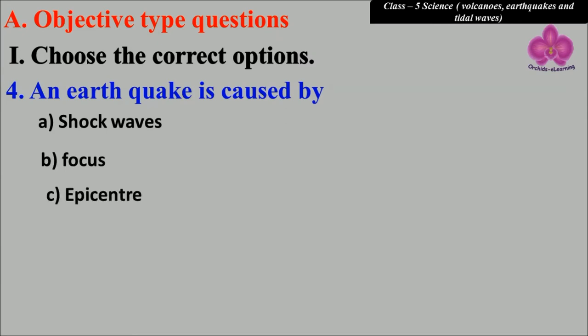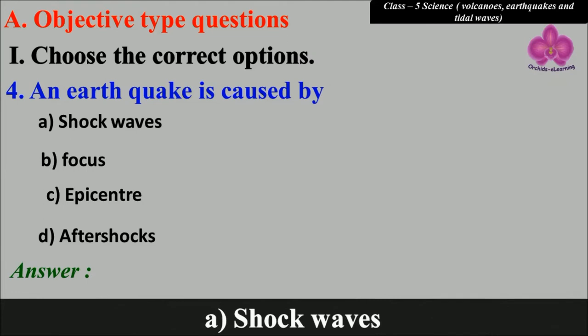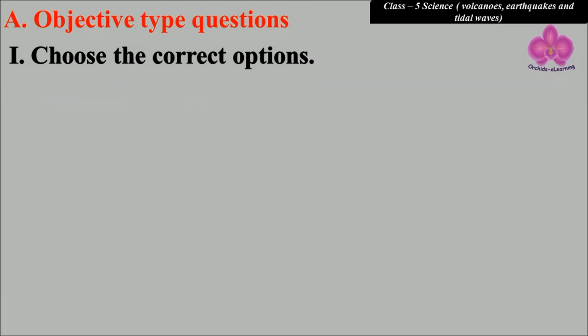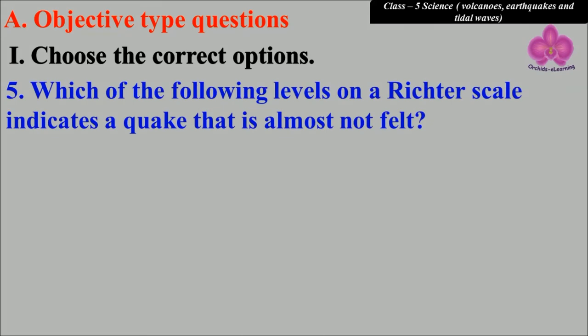Which of the following levels on a Richter scale indicates a quake that is almost not felt? a) one, b) two, c) five, d) eight. The answer is a) one.